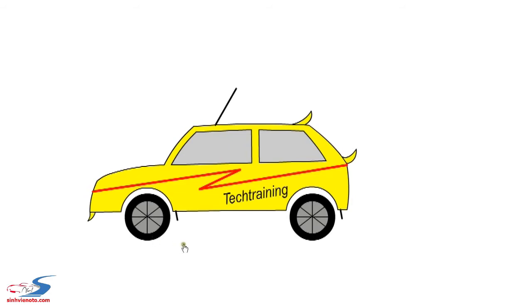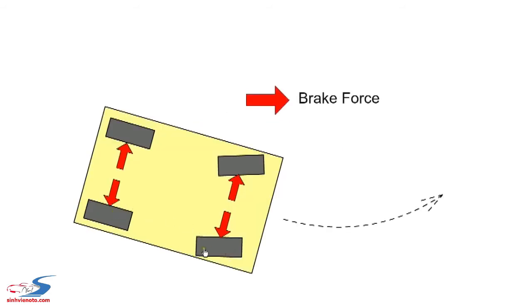Also, when a car corners, the weight will be transferred to the outside wheels. When the weight is transferred to one side of the car, there is a possibility of the wheels on the other side locking.